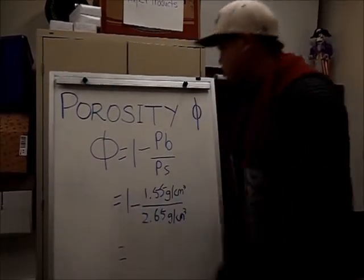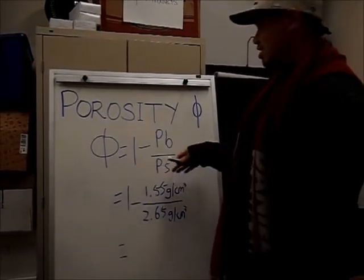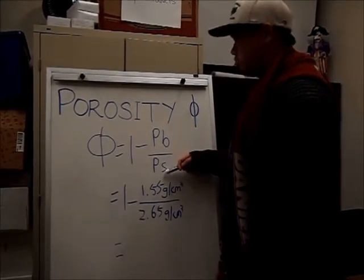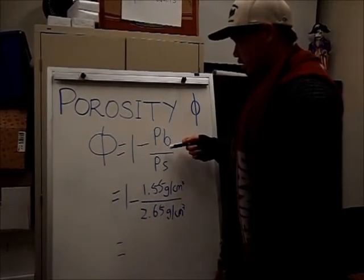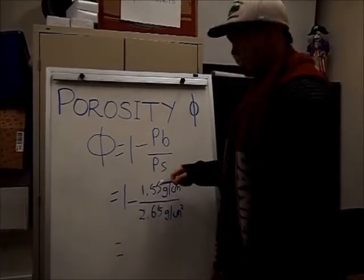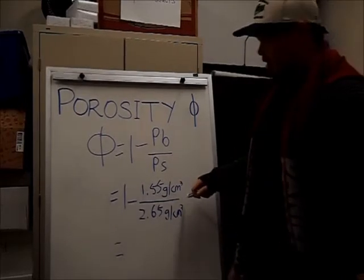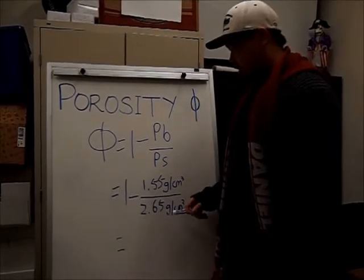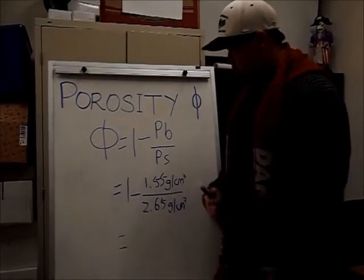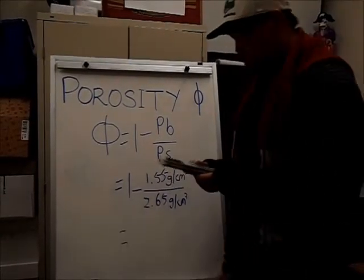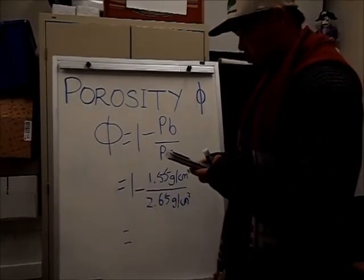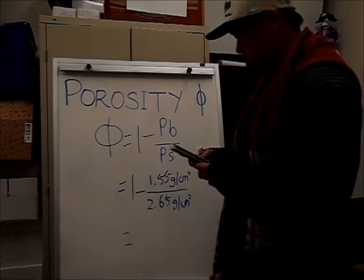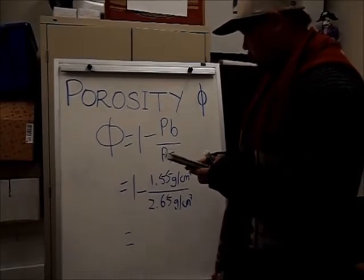So after you find out the—go back to this equation. Porosity equals 1 minus bulk density over particle density. So we found bulk density in the lab, so it's 1.55 grams per cubic centimeter. And then we're assuming particle density is 2.65 grams per centimeter. And then now you can calculate what porosity is. So 1 minus 1.55 and then divide by 2.65.